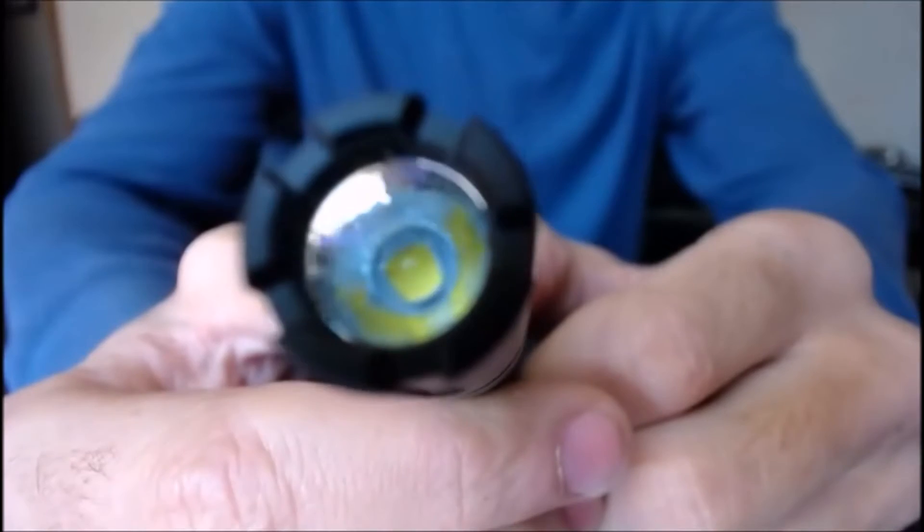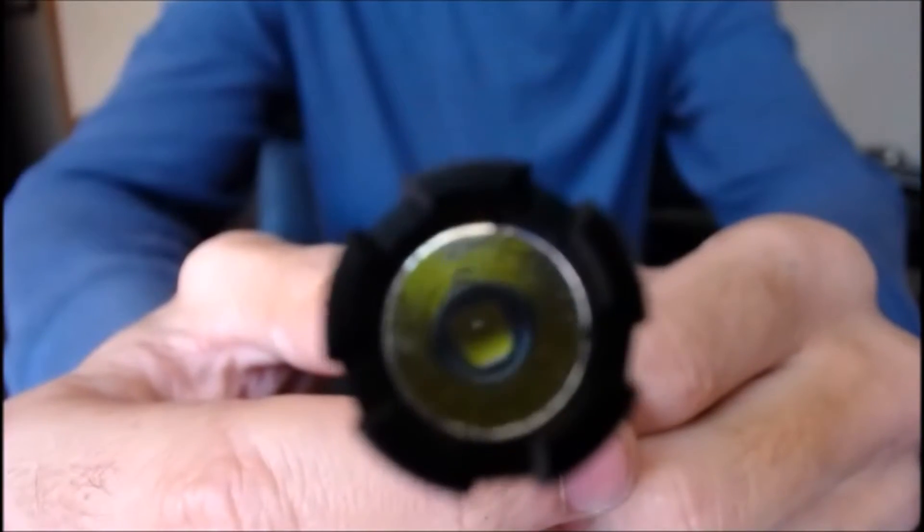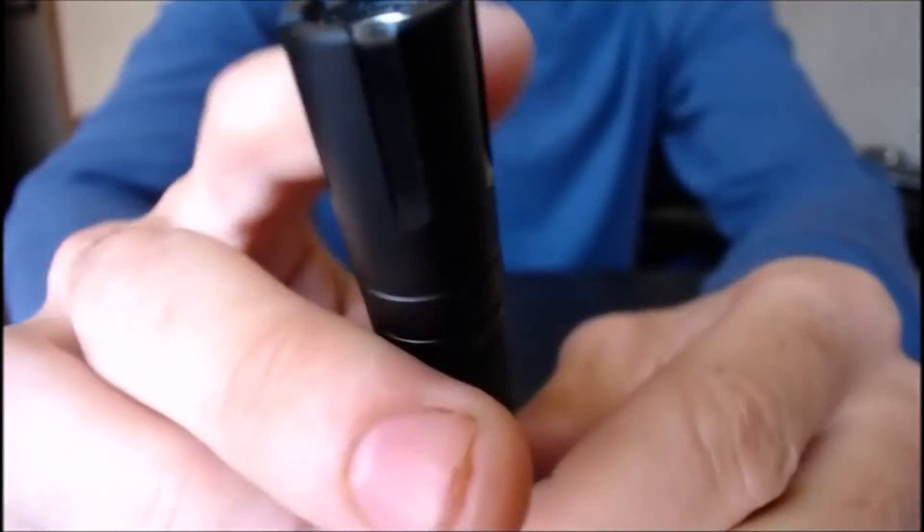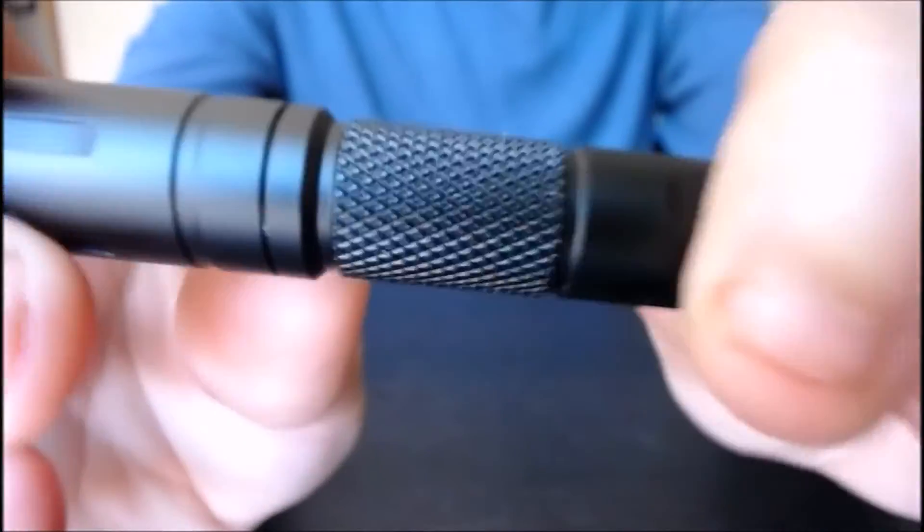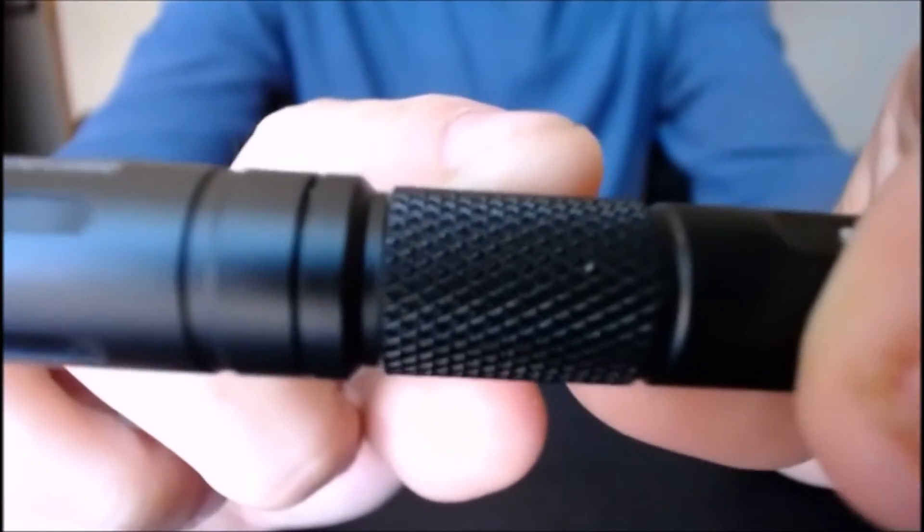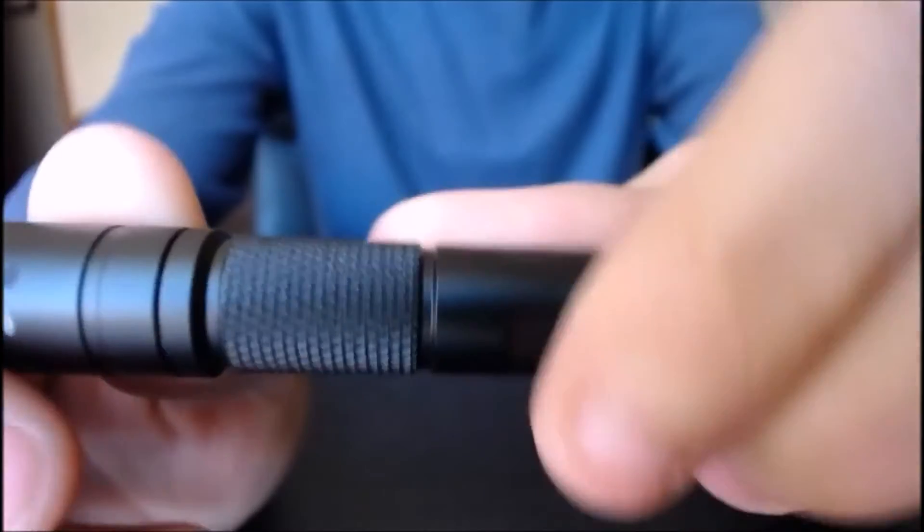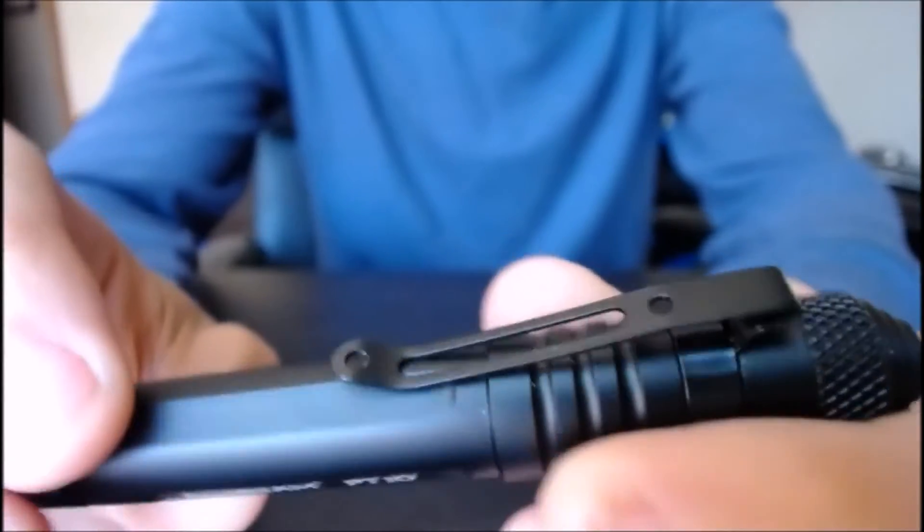Now this is the LED, the XPL-HD. It has a crenulated bezel. Right underneath the head here, we have a texture. It is fairly grippy. I like that in a pen light because most of the competition offer super smooth flashlights and they tend to slip out of your hand. This is a good improvement they put.